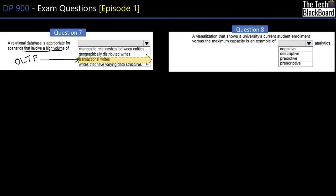Question eight: a visualization that shows a university's current student enrollment versus maximum capacity is an example of which analytics — cognitive, descriptive, predictive, or prescriptive? This is about current student enrollment — something happening now. Descriptive analytics tells you what's happening now or what happened in the past, so the correct answer is descriptive analytics.